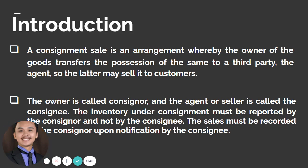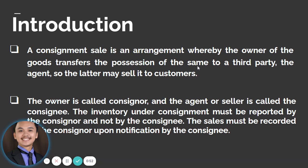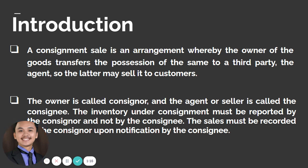When we talk about a consignment sale, it is an arrangement whereby the owner of the goods transfers the possession of the same to a third party — the agent — so the latter may sell it to customers. What is being transferred is only the possession, but the ownership still remains with the consignor.